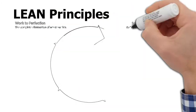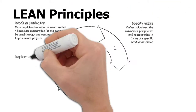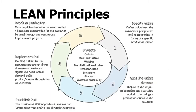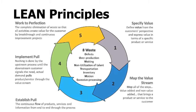Now let's move on to the lean principles. There are five basic lean principles you have to follow. First, specifying the value — what the customer needs. Second, mapping the value stream — identifying value-add and non-value-add activities in your system. Third, establishing a pull system wherein products, services, and information can be pulled from end to end.